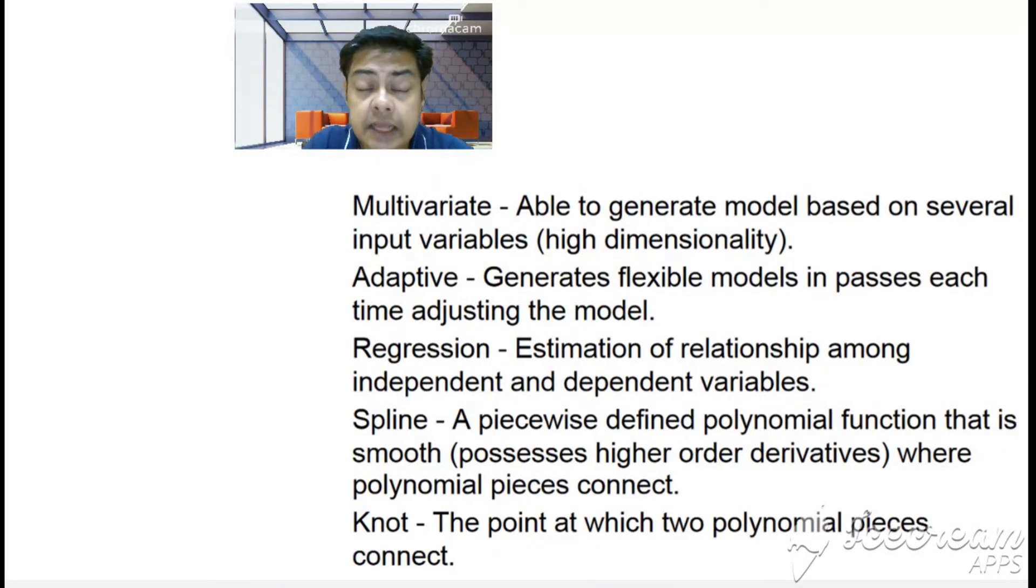The name is quite large: Multivariate Adaptive Regression Splines. Let's understand and decode each word. Multivariate because it's able to generate models based on several input variables, the x variables—many more than one, 10, 12, 13, 14, 25. I've myself used up to 37 x variables, so that's why it's called multivariate. Adaptive because it generates flexible models in passes, each time adjusting the model, so that's why it's called adaptive.